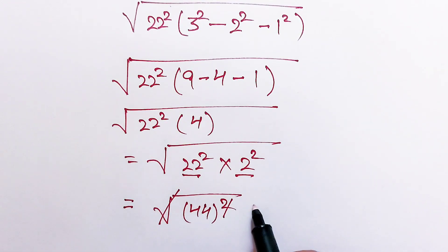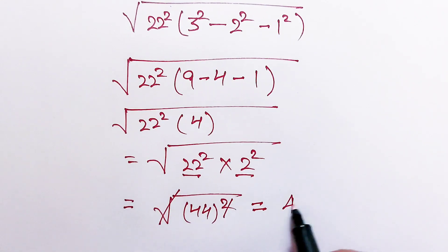And this square and this square will cancel out this square root, and the final answer is 44.